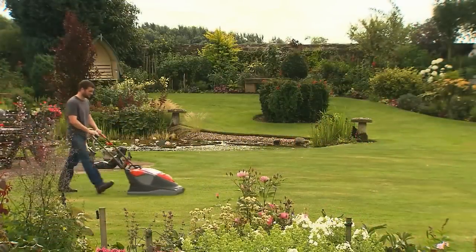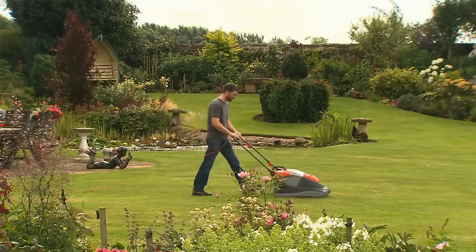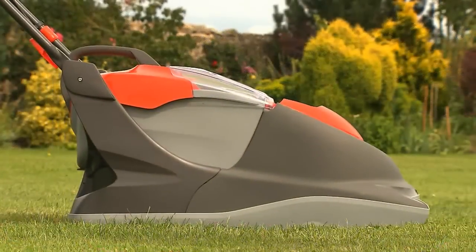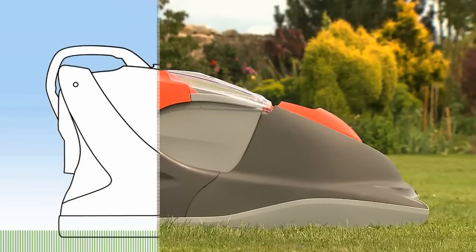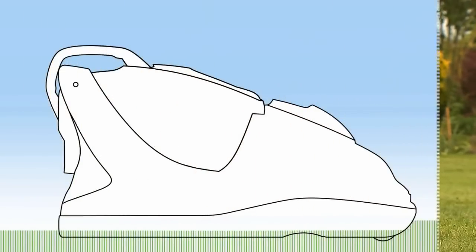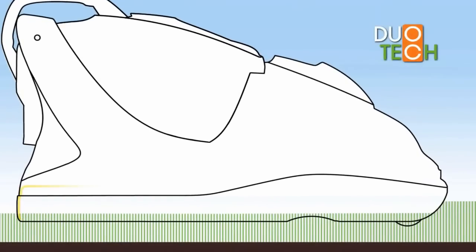We've given great thought to how people would want the UltraGlide to perform. Inside, the entire hover mower has been re-engineered with a focus on improving overall performance. At the heart of this revolutionary design sits the powerful Duotech system, made up of two main parts called chambers.